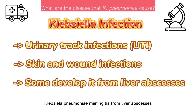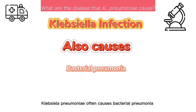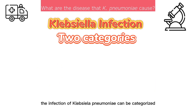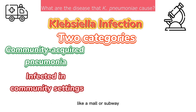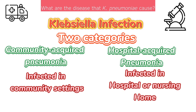Some people develop K. pneumoniae meningitis from liver abscesses, where bacteria travel from the liver to the central nervous system. K. pneumoniae often causes bacterial pneumonia, or infection of the lungs. Infections can be categorised into two main categories: community-acquired pneumonia, which occurs if an individual gets infected in a community setting like a mall or subway, and hospital-acquired pneumonia, which occurs when an individual gets infected at a hospital or nursing home.